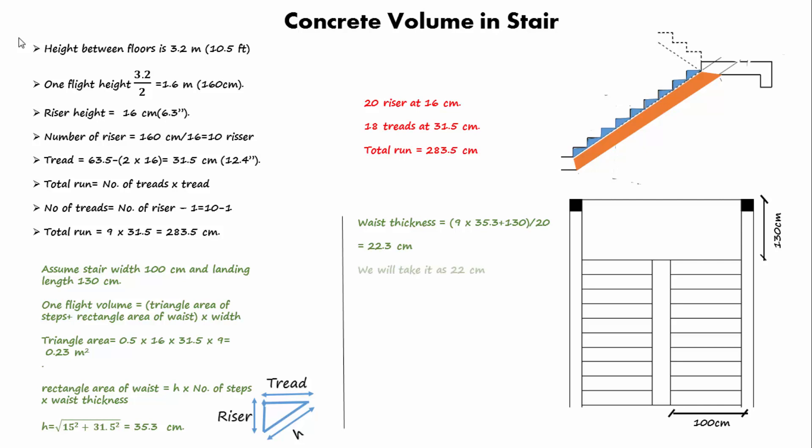After finding waist thickness and hypotenuse of the step, we can calculate the rectangular area of waist: 9 × 35.3 × 0.22. Now let's calculate the flight volume — it equals (0.23 + 0.70) × 1 = 0.93 cubic meters.